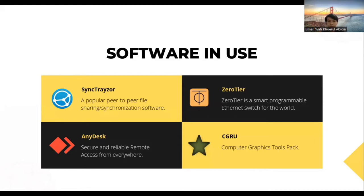This software helps IT Support and other teams with sharing and synchronization files quickly. Next is Zergir. Zergir is a smart programmable Ethernet switch. It allows all network devices, virtual machines, containers, and applications to communicate as if they all reside in the same physical data center or cloud region. This software helps us with the render farm, which needs to be on one network.